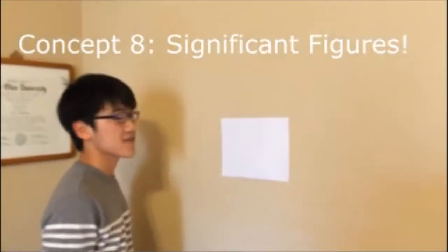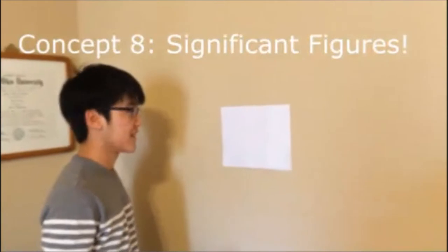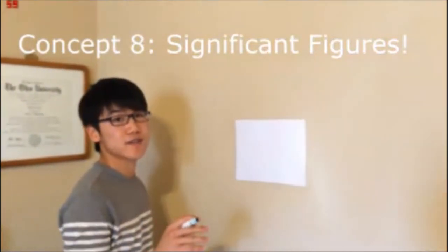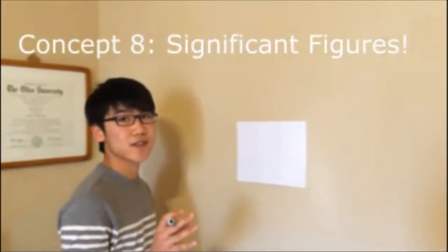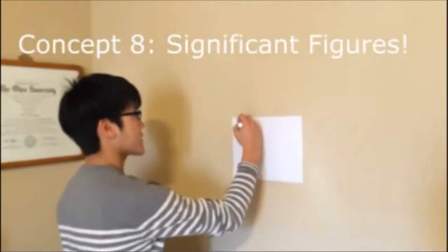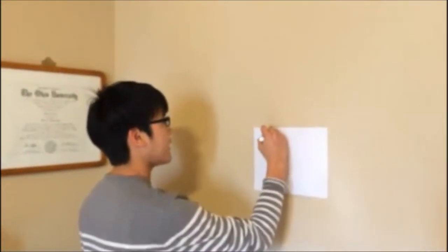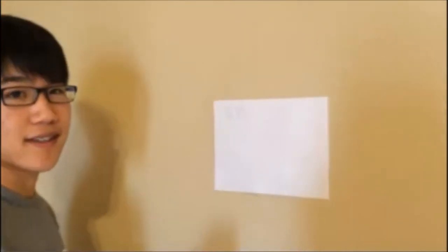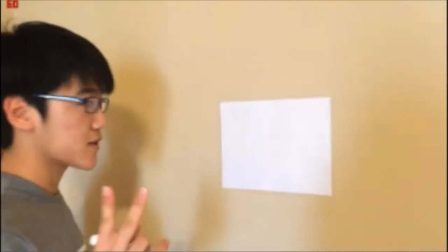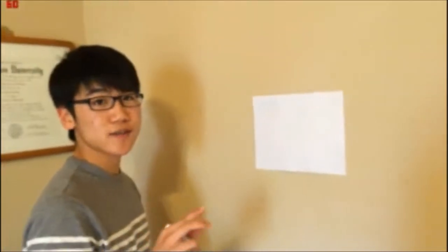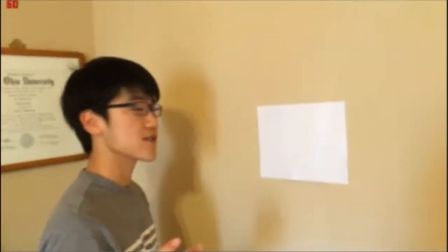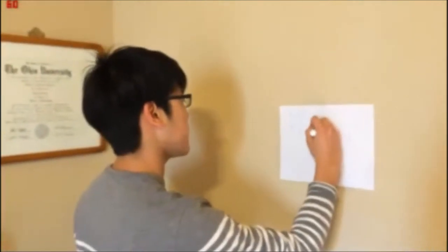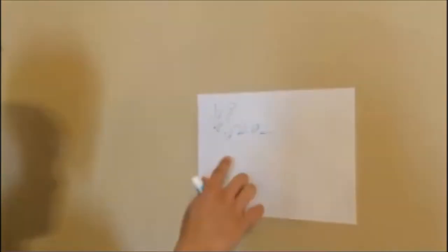Hello class, I'm going to teach you about significant figures today. The first rule is that all non-zero numbers are significant figures. For example, the number 7 has one sig fig. Sig fig rule number two: all zeros between non-zero numbers are significant figures. For example, 202 has three sig figs.